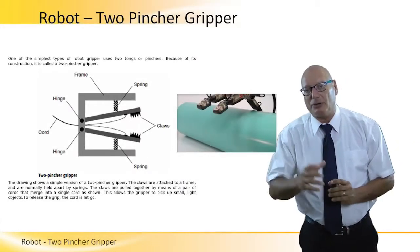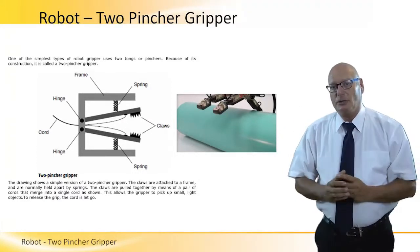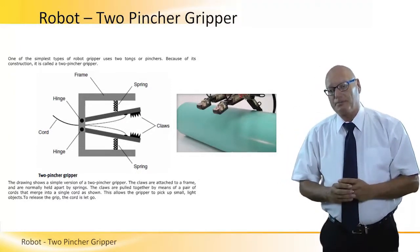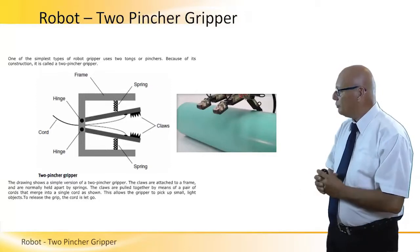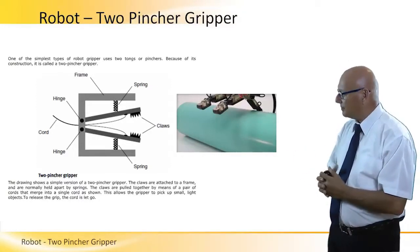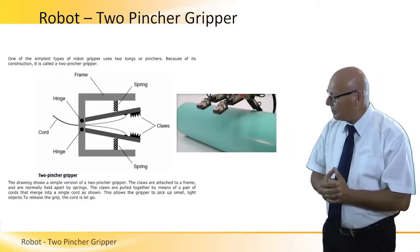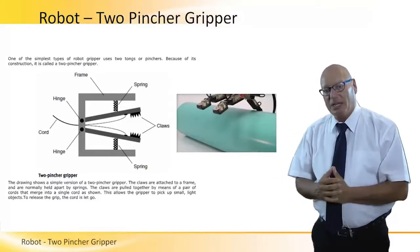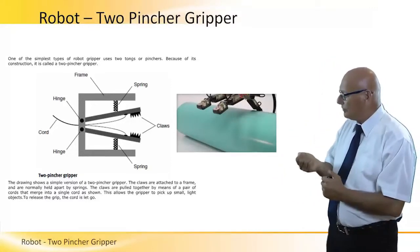The simplest gripper that exists is the two-pincher gripper. In the picture on the right, we see an actual practical example. Let's look at the structure of it. It has a cord on the left-hand side.